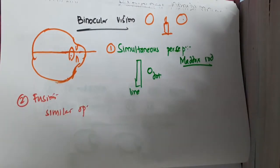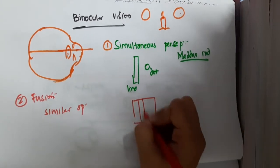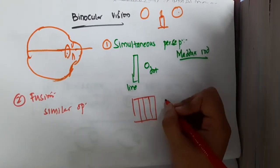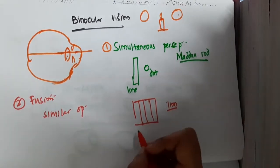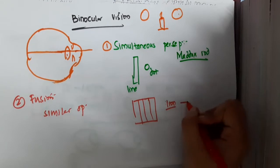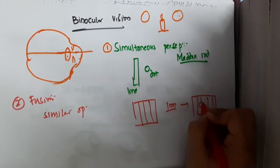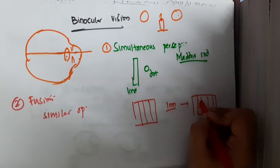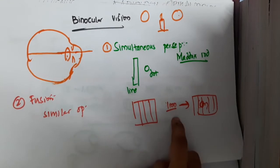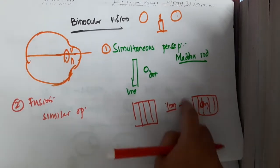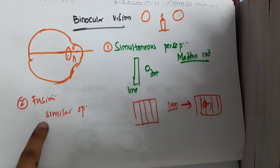There is a test for simultaneous perception: if with one eye you see a cage and with the other eye you see a lion simultaneously, then you can see the lion inside the cage. So two objects are perceived together as one object. That is simultaneous perception.